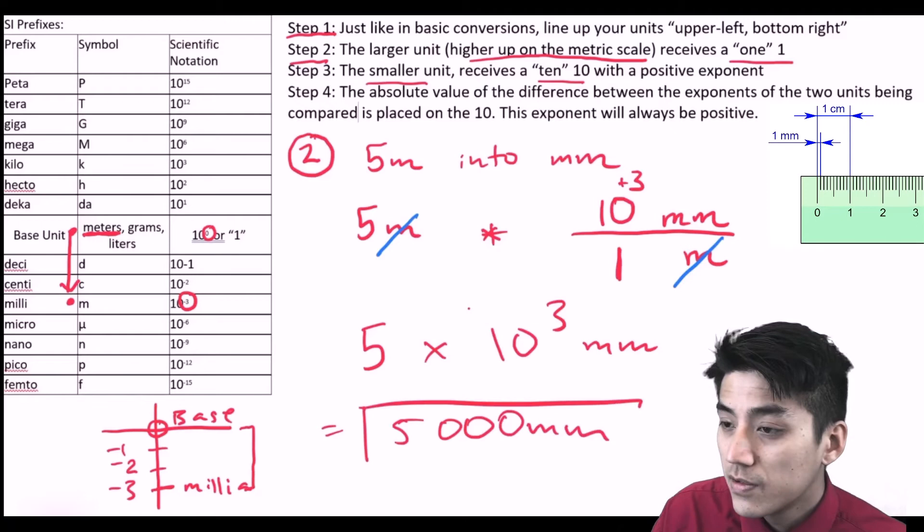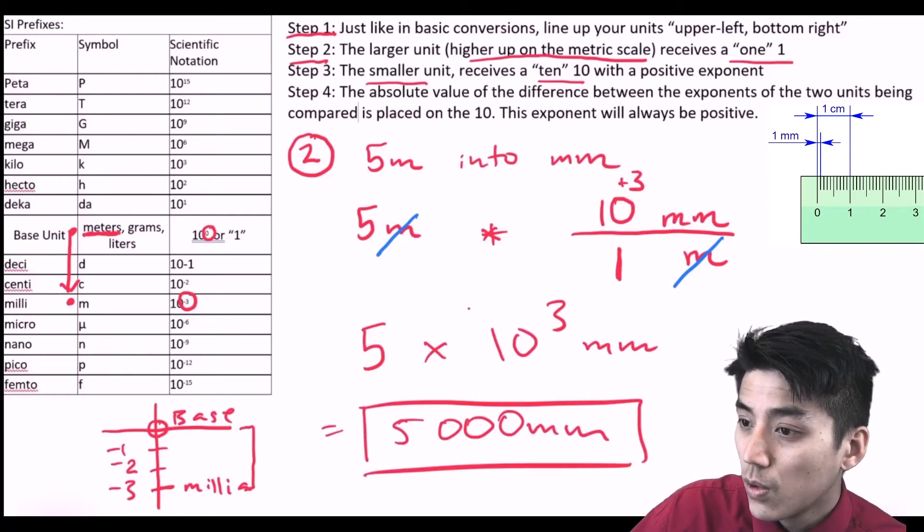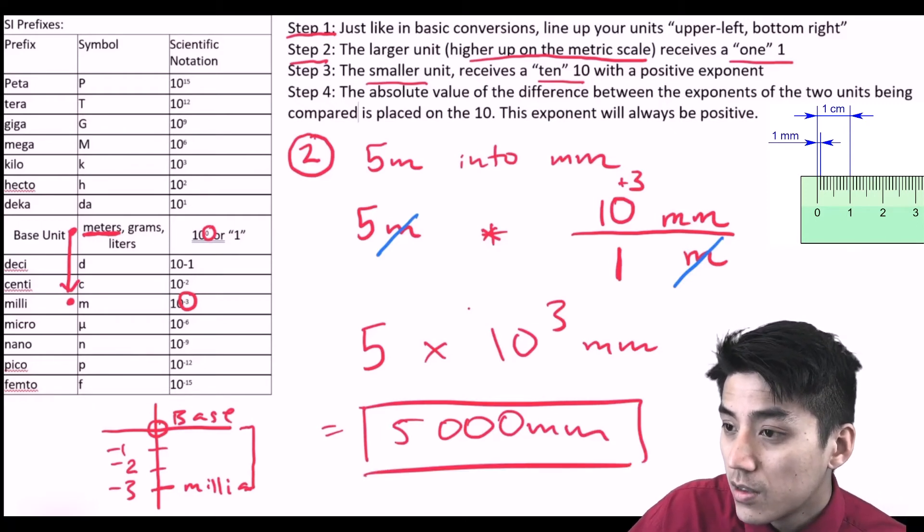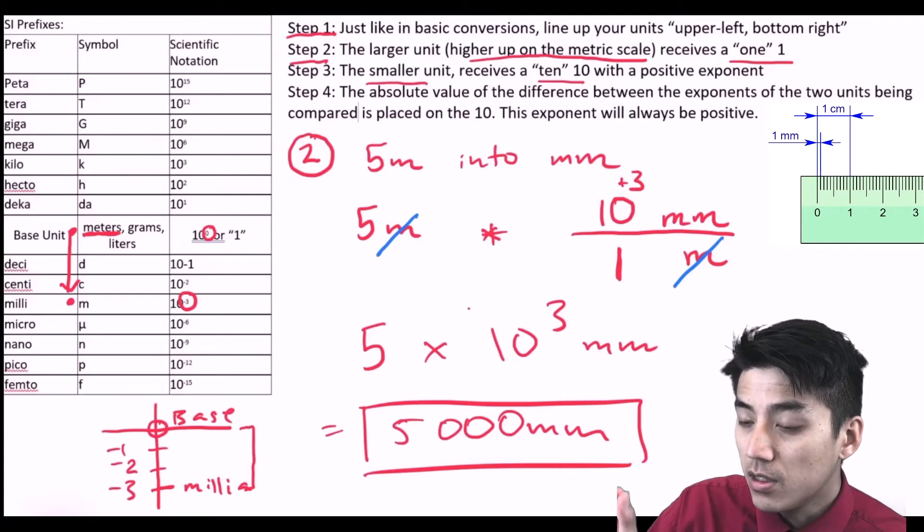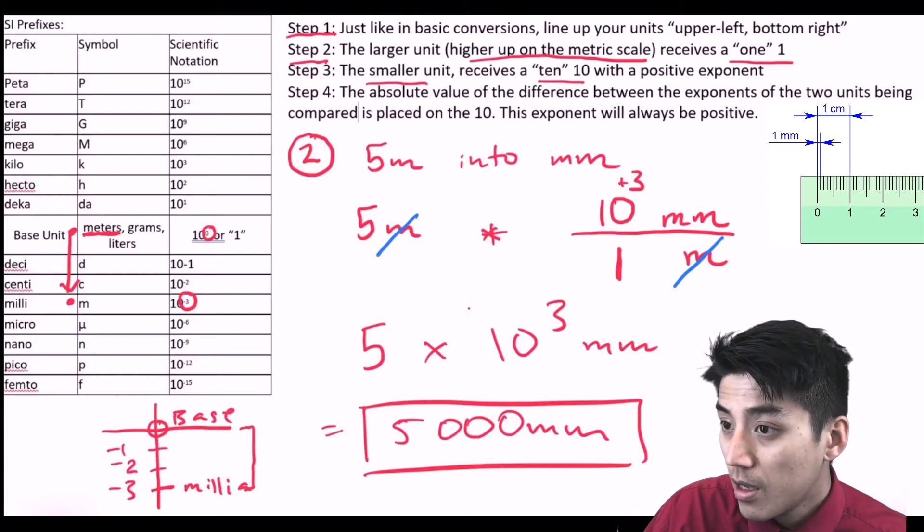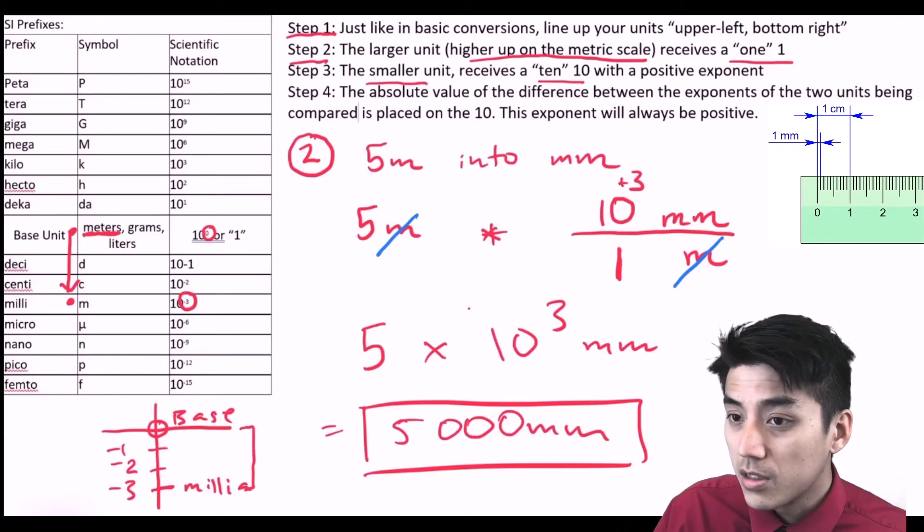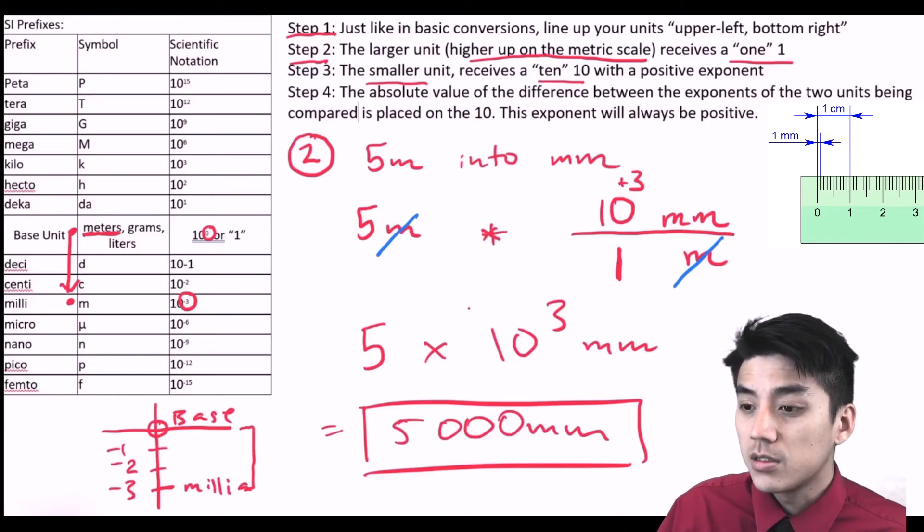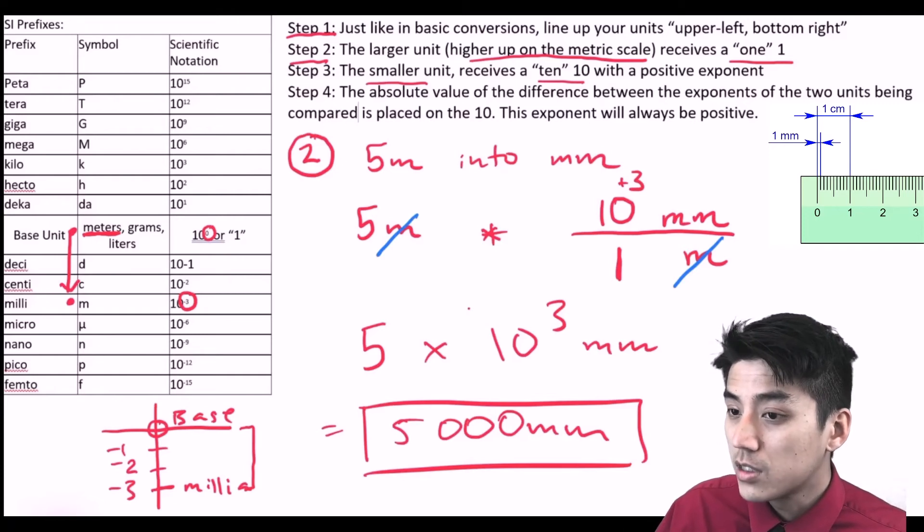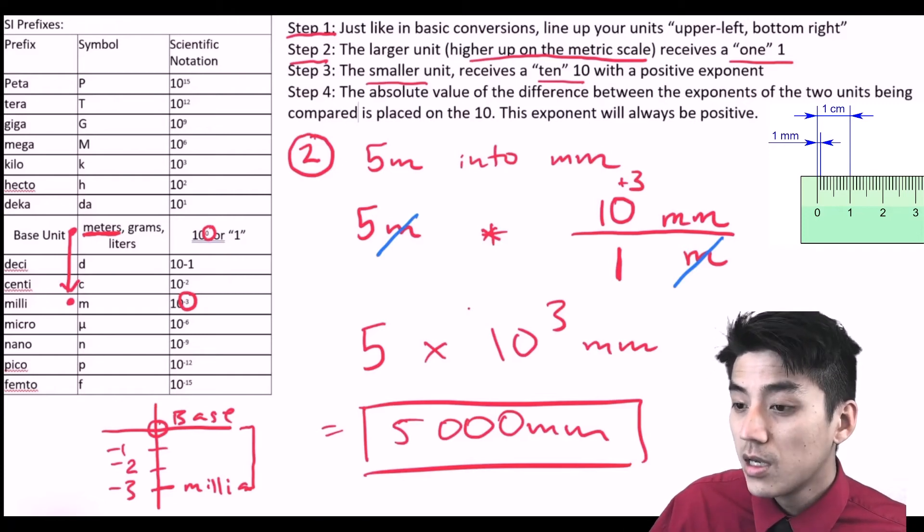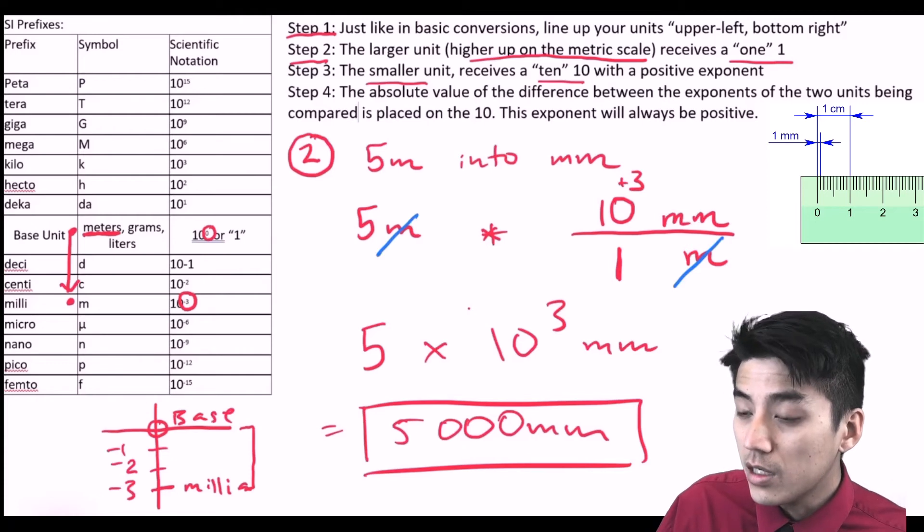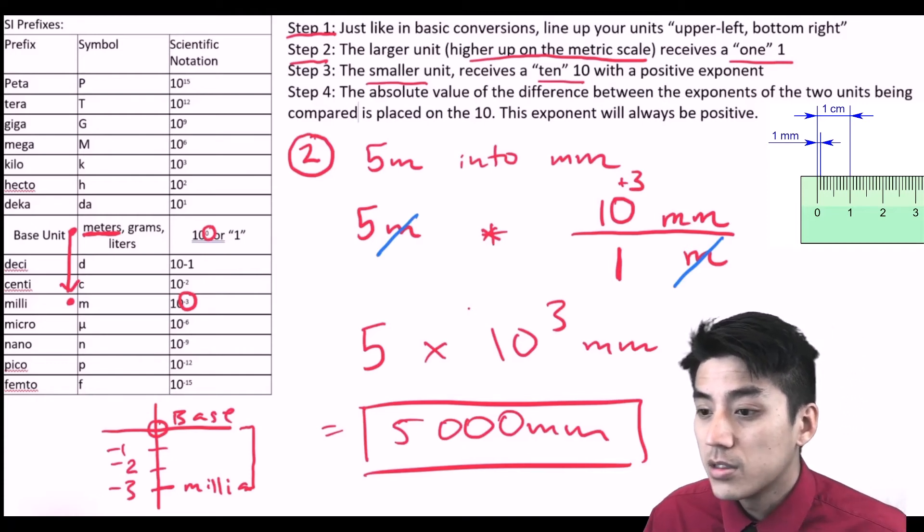Then you ask yourself, does it make sense? Look at that green ruler that's right above my head. A millimeter is a very tiny unit. It's like the size or the diameter of like a hair. So I would probably need 5,000 of those millimeters to match five meters. To give you a visual, a meter is about the length of a yardstick. So I have five yardsticks. Five yardsticks would probably need 5,000 millimeters to match that.